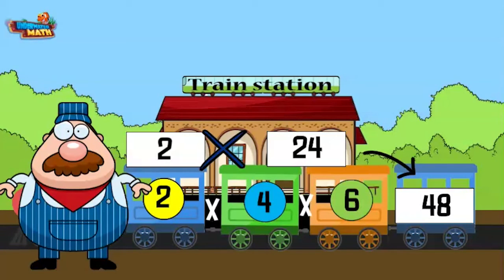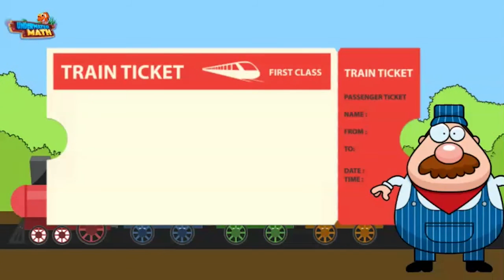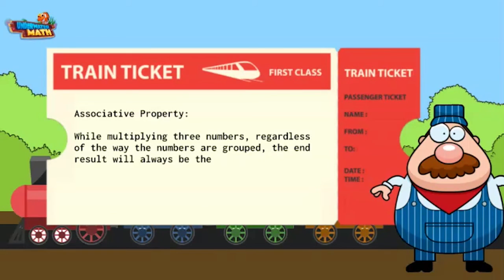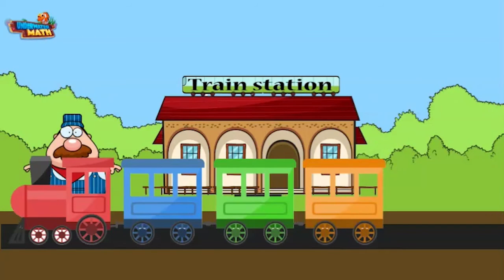Multiplication properties allow people to move numbers around in ways that make them easy to work with. To review: the associative property says that while multiplying three numbers, regardless of the way the numbers are grouped, the end result will always be the same. That does it for us at the train station — I hope learning about the properties of multiplication helps you along your way to becoming a talented mathematician.